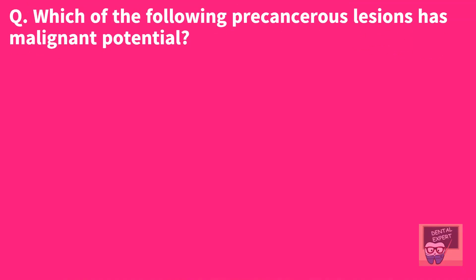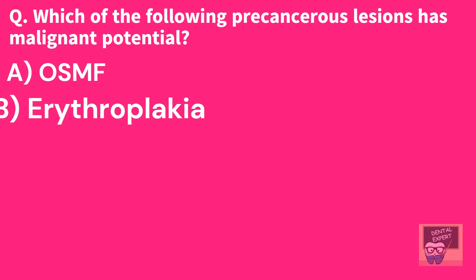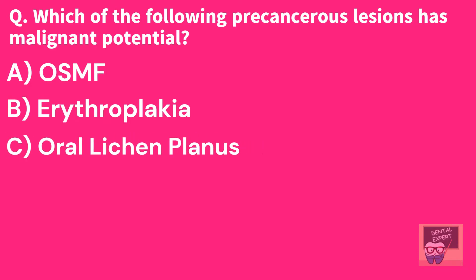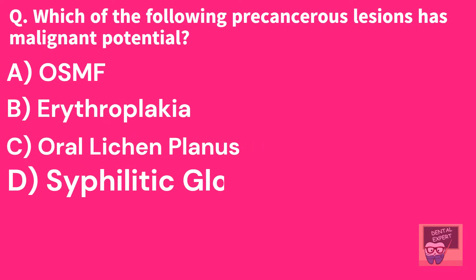Which of the following precancerous lesions has malignant potential? The options are: A. OSMF, B. Erythroplakia, C. Oral lichen planus, D. Syphilitic glossitis.